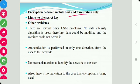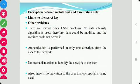Other problems in GSM include: first, there is no data integrity algorithm used, so data could be modified in transit and the receiver would not be able to detect it. Second, authentication is performed in only one direction — from the user to the network. No mechanism exists to identify the network to the user, and there is no indication to the user that encryption is being used.